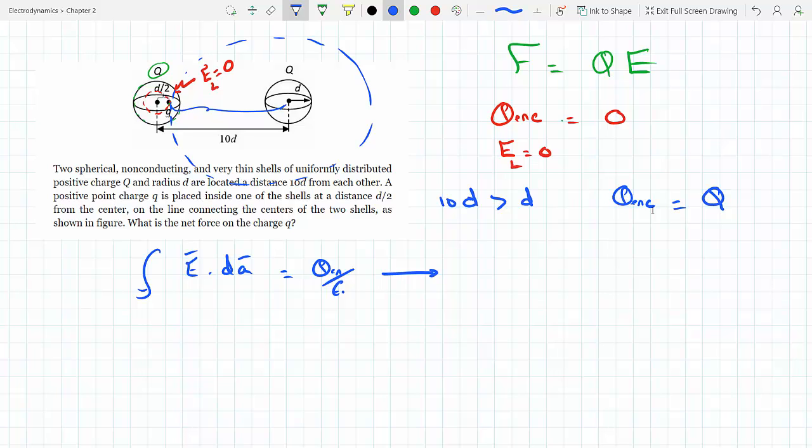I know that this is radial and the area is also pointing in the radial direction, so I can take the E out. The area of that sphere is just—so this becomes EA equals Q enclosed over epsilon. Q enclosed is Q, so this will be Q over 4πε.